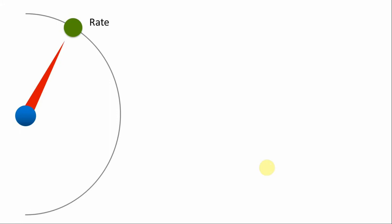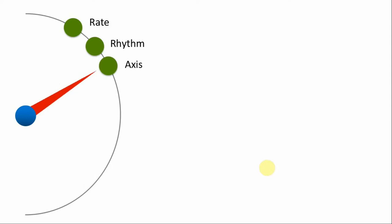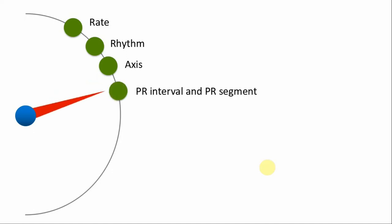The first thing to look at is the rate — look at the atrial rate and the ventricular rate, as they may not be the same. Then look at the rhythm: is it sinus rhythm, irregularly regular, or something else? Then look at the axis — most commonly the QRS axis, but you can also look at the P-wave axis. Then look at the PR interval, from the beginning of the P wave to the beginning of the QRS complex. Don't confuse the PR interval with the PR segment, which is from the end of the P wave to the beginning of the QRS complex.